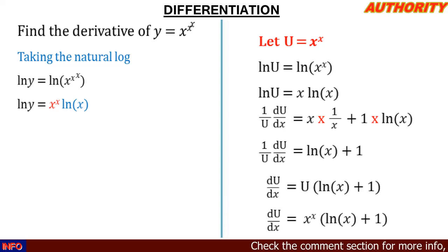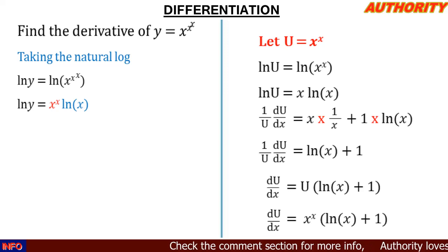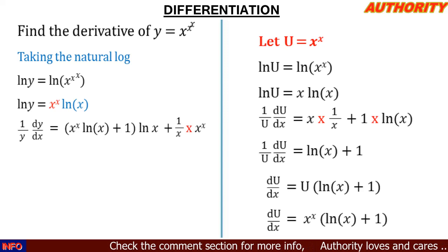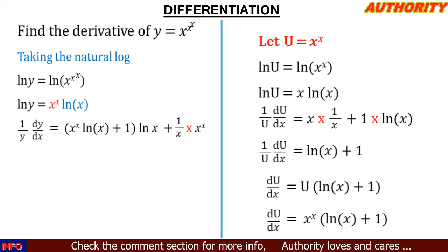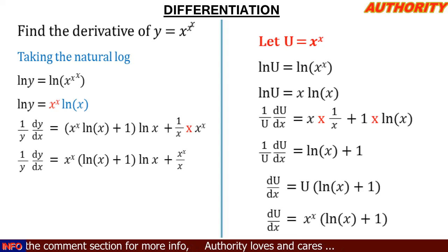Now let's go back to the main equation: ln(y) = x^x·ln(x). We just found that the derivative of x^x is x^x·(ln(x) + 1). Applying the product rule: the derivative of ln(y) gives (1/y)·(dy/dx) on the left side. On the right side we have: x^x·(ln(x) + 1)·ln(x) plus the derivative of ln(x), which is 1/x, multiplied by x^x.